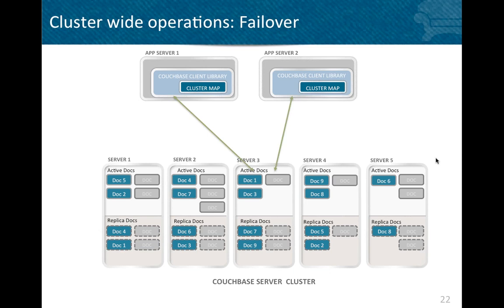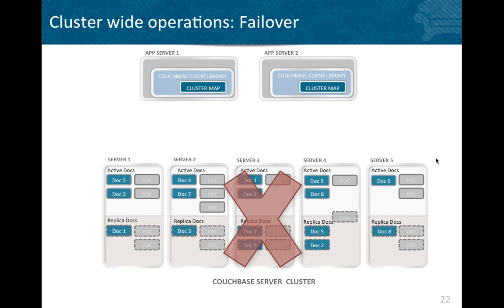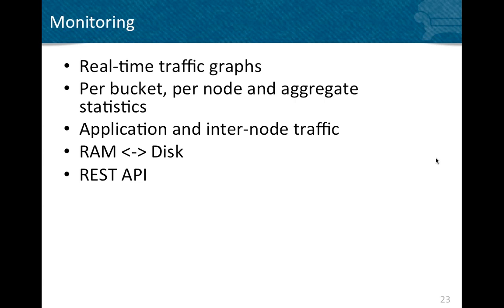If one of the nodes in Couchbase Server fails, replica documents from other nodes are promoted to active documents. The cluster map in the Couchbase client library is updated to reflect the new topology — the failed node is noted, and the application is now aware through the client library of the new set of active nodes.